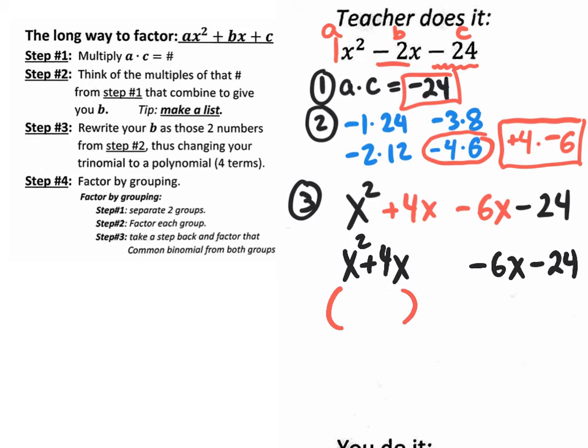What could I pull out? An x? Okay, what would I have left? x plus 4. Okay, good. And how about the second group over here? What could I pull out? A negative 6. A negative 6. Good job, guys. So a negative 6. And that would also give us an x plus 4 on the inside.